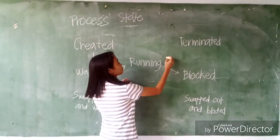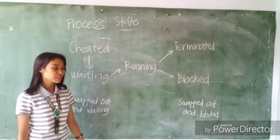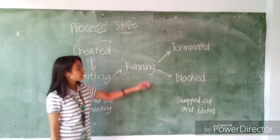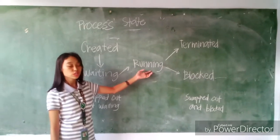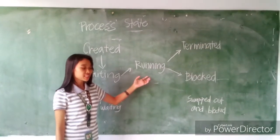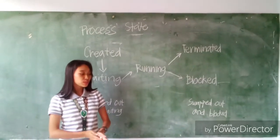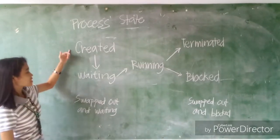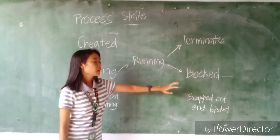From here, running goes to terminated. A process may be terminated either from the running state by completing execution or by explicitly being killed. In either of these cases, the process moves to the terminated state. So in this process, the states are: created, waiting, running, terminated, and blocked.